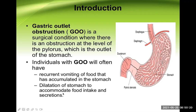There is dilatation of the stomach to accommodate food intake and secretions — this is the natural tendency of any GI organ, especially the stomach and intestine. If there is an obstruction, the proximal part from that obstructed area will always become dilated. So in this case the stomach will become very big in size, and there will be visible peristalsis.